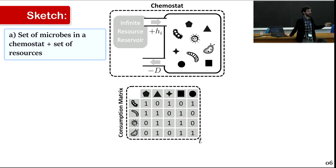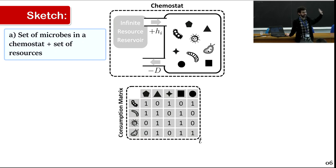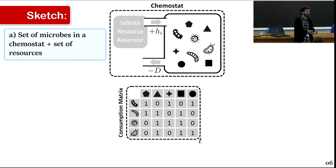We're going to start with a consumer-resource model on a chemostat. We have our microbes in this chemostat, there is a constant supply of resources, and the number of resources that can exist in the system is unlimited. Microbes have their genes and can consume the resources that are there; if a new microbe appears able to metabolize a new resource, that new resource is available.